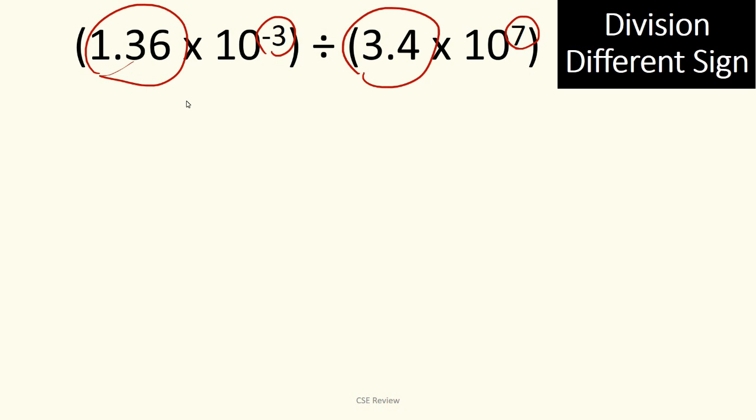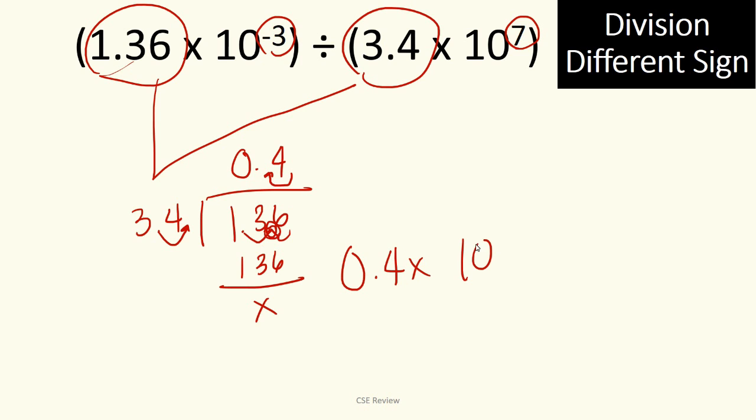The left side, which is 1.36 and 3.4, we'll work on them first. So you have 1.36 divided by 3.4. Again, there's a decimal place here, so we'll move it once, which means we'll also move this once. So, 1.36 divided by 34 first, without minding the decimal, that will give you 4. So the answer here is still 1.36. This will cancel. It's used up. Then because you have a decimal point once there, we'll move the decimal place here. It becomes 0.4. So the answer we're waiting for is 0.4 times 10 raised to, we don't know yet because we haven't subtracted in the second part.